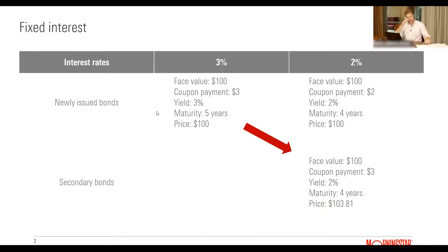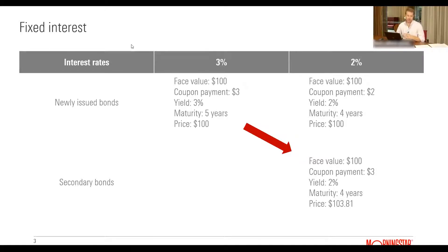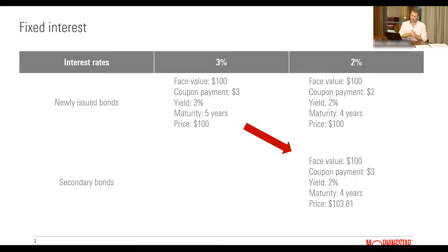Let's start with fixed interest, then we'll go on to equities, and we'll touch on housing. I know everyone likes to think housing prices have gone up because they've redone their kitchen, but interest rates have a pretty big impact on that as well. Fixed interest is where there's the most direct impact between interest rates and returns and asset values. We've got two different scenarios: newly issued bonds and secondary bonds.